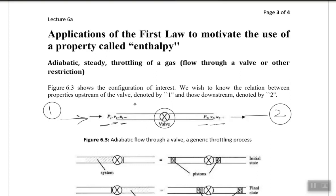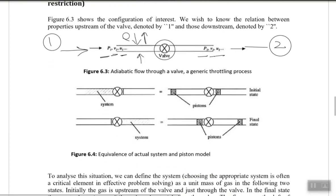There is no heat energy entering or leaving the system. The process is also a steady flow process — there is no change in kinetic energy, no change in mass, and no change in velocity. Let's define what we mean by the upstream and downstream, or in other words, what is state one and what is state two.